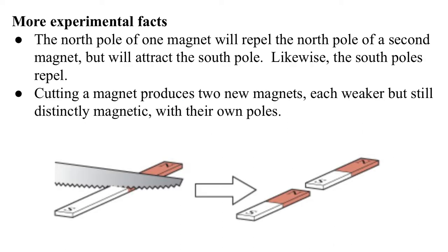Some more empirical facts. These are things, again, that are observed. They're not coming from anywhere, they've just been observed. The north pole of one magnet will repel the north pole of a second magnet, but attract the south pole. And likewise, the south poles will repel each other, but be attracted to the north pole.